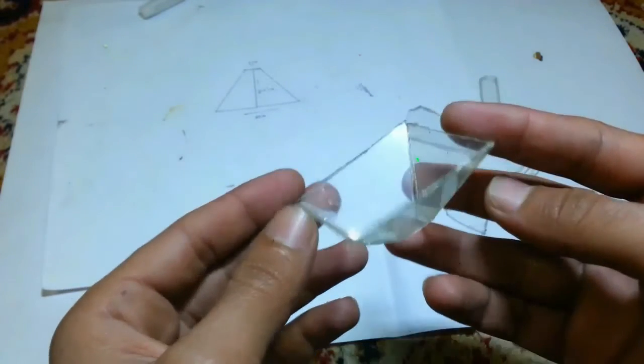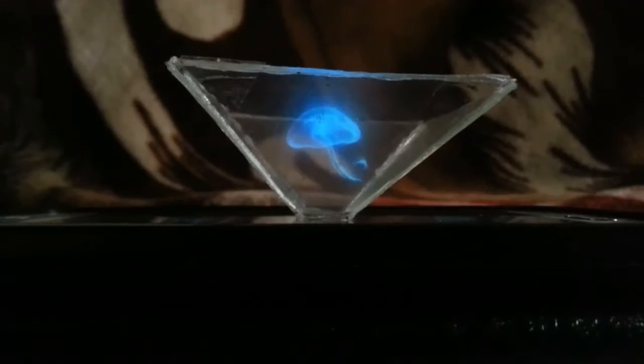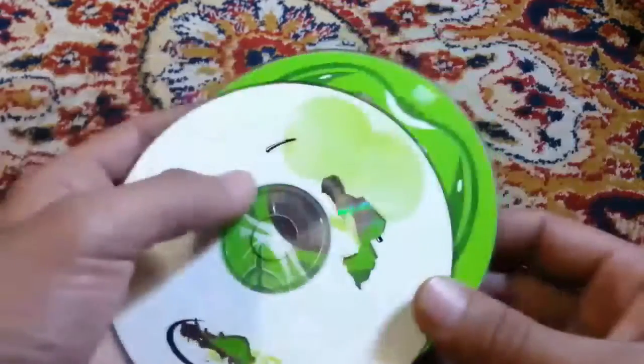In this video I will show you how to make a hologram projector for your smartphone from a CD or DVD which will give you holograms like this. First of all, take an old CD you have.